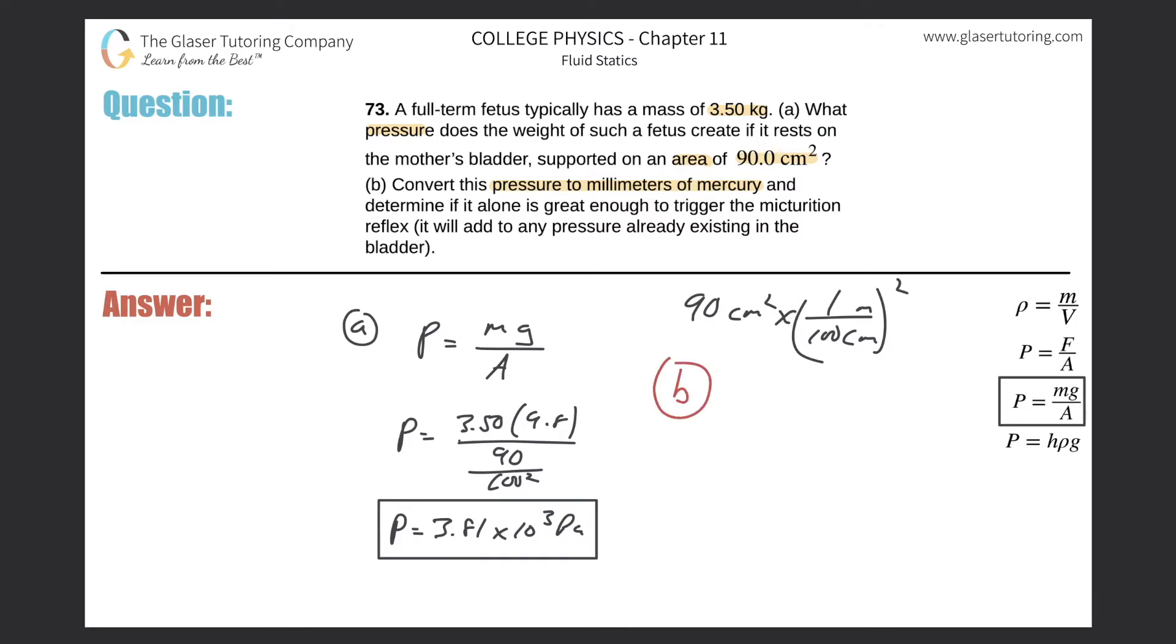What we need to do is convert this value into millimeters of mercury. So this is 3.81 times 10 to the third Pascals. I know that there is approximately 1.013 times 10 to the fifth Pascals for every 760 millimeters of mercury.